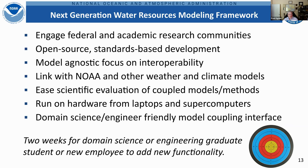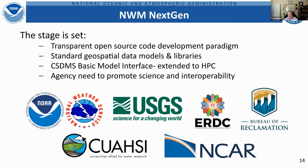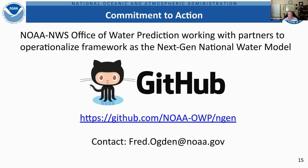To summarize, we are developing the next-generation water resources modeling framework to engage federal and academic research communities using open-source, standards-based development with a model-agnostic, interoperability-focused approach. It will be linked with NOAA and other weather and climate models, ease scientific evaluation of coupled models, run on hardware from laptops to supercomputers, and feature a domain-scientist-friendly model coupling interface with a two-week target for adding new functionality. Our code is already on GitHub for transparency, and we anticipate having the design and documentation ready for the community to engage with around the AGU demo. Contact information is available for questions.